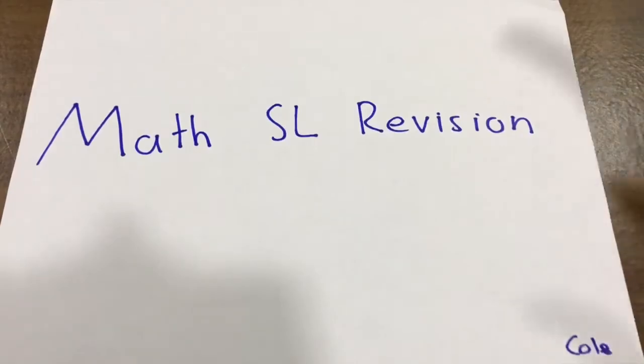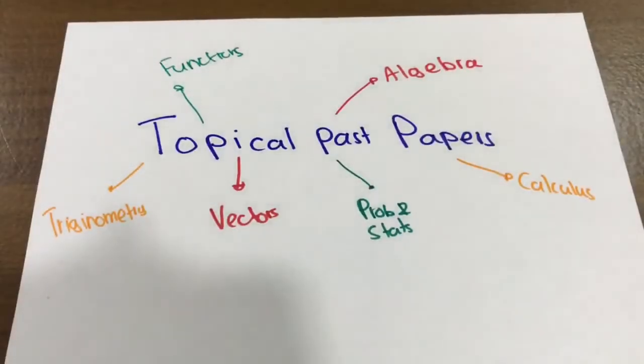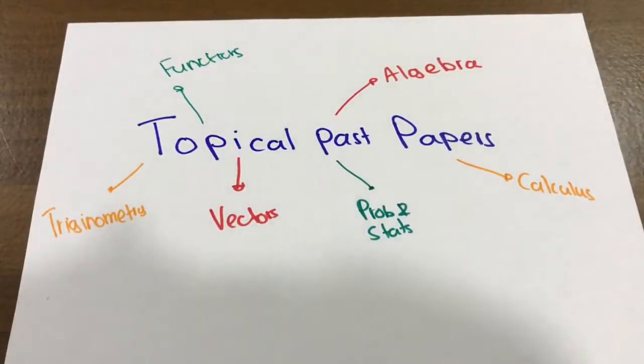The first thing you're going to do is topical past paper questions. When you do past paper questions by topic, you have to understand that, especially for Section A, 80% of the syllabus hasn't changed in the last 10 years. The IB has basically been finding new ways to ask the same questions, and inevitably they're going to run out. If you do these questions together, you're going to find patterns within these questions.